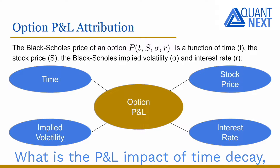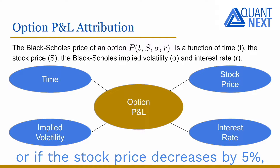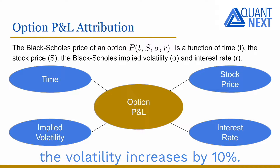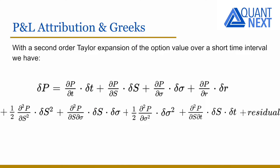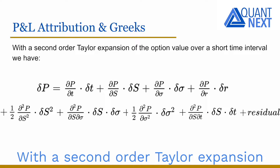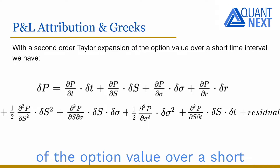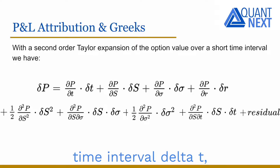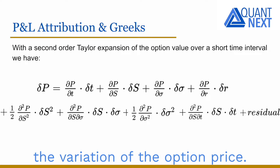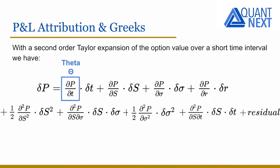What is the P&L impact of time decay, or if the stock price decreases by 5%, or the volatility increases by 10%? With a second order Taylor expansion of the option value over a short time interval delta t, we can decompose the variation of the option price.